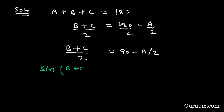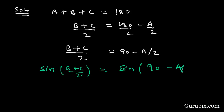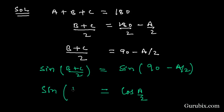Using the identity sin(90° - θ) = cos θ, where θ is a/2, we get sin((b+c)/2) = cos(a/2). This is exactly what we wanted to prove. Thank you.